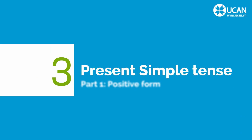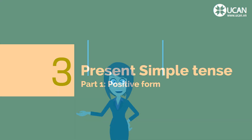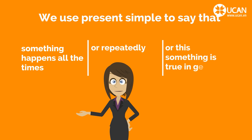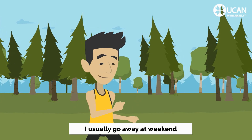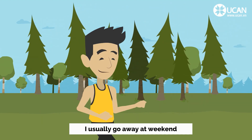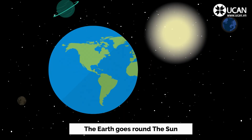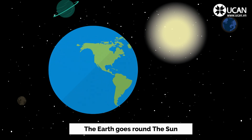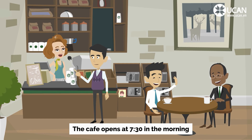Present Simple Tense, Part 1: Positive Form. We use the Present Simple to say that something happens all the time, or repeatedly, or that something is true in general. For example: I usually go away at weekends. The earth goes round the sun. The cafe opens at 7.30 in the morning.